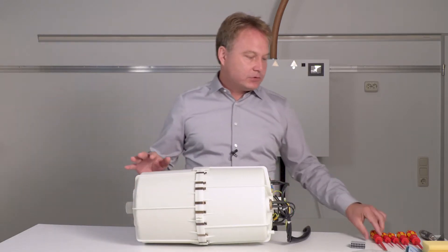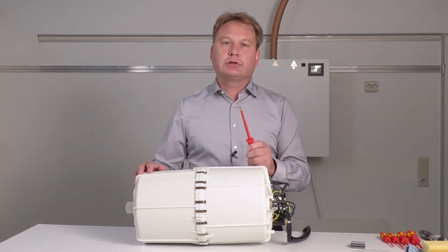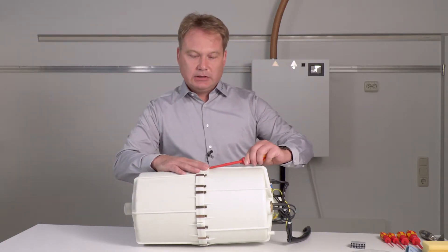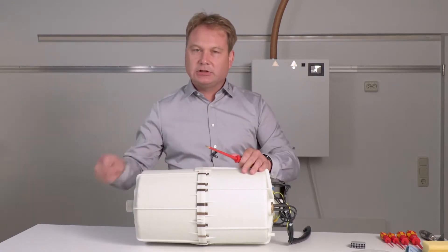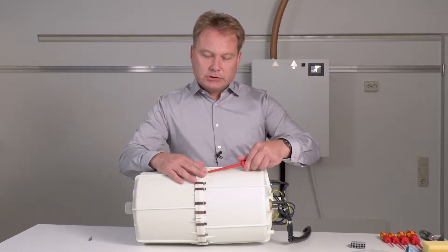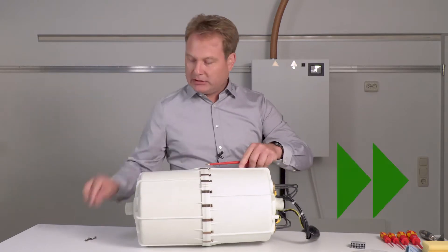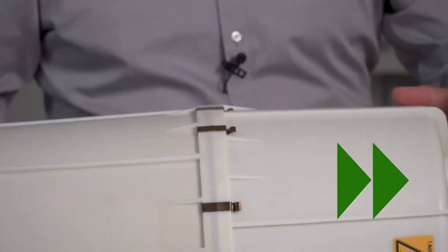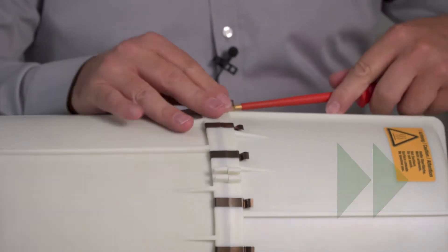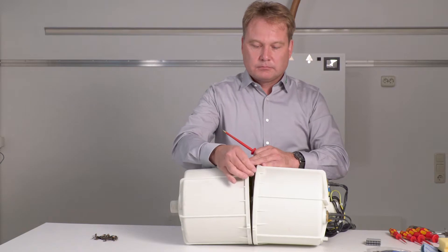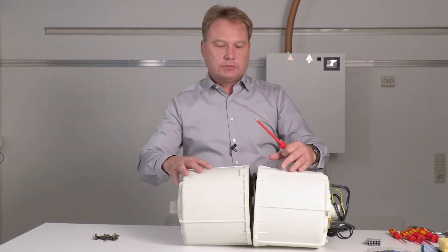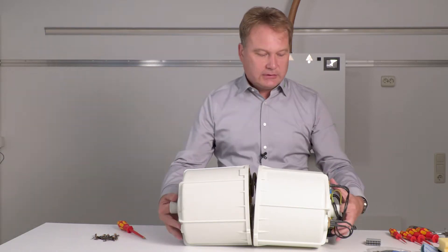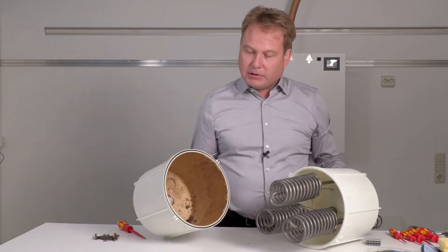For disassembly, we use a standard slotted screwdriver. Lift under the clamps. Just hold on to the clamps a little so that they don't jump out, and go all around. You can see the steam cylinder separating. Now you can pull the two halves apart.